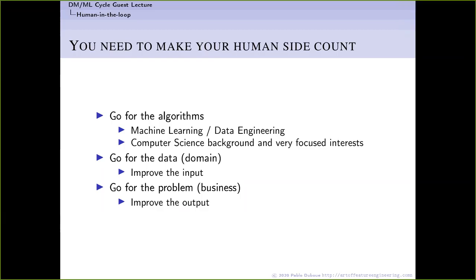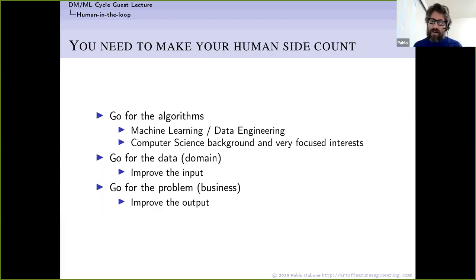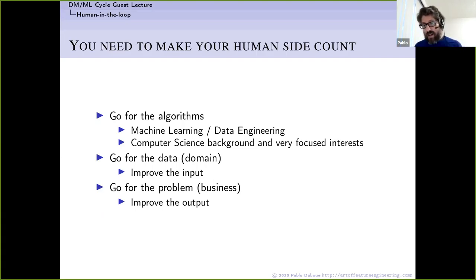As data scientists, we need to make our human side count. We can go for algorithms — focusing on ML and their engineering if we have a strong computer science background. We can go for the data and the domain — improving the input that goes into machine learning. Or we can go for the problem and the business side — improving the output of the system. These are the two directions I want to discuss.